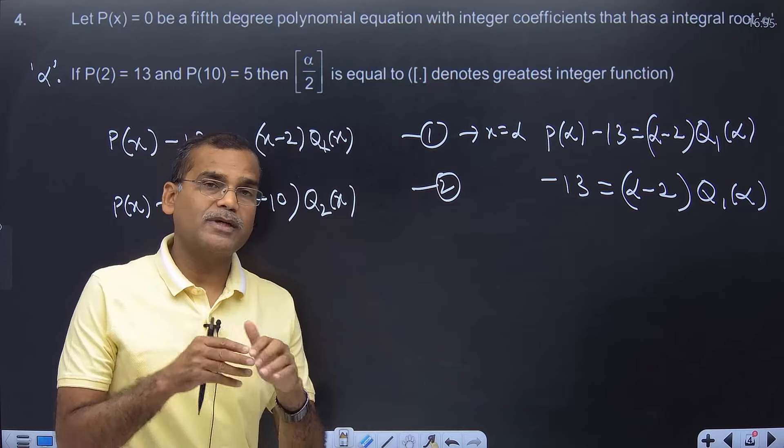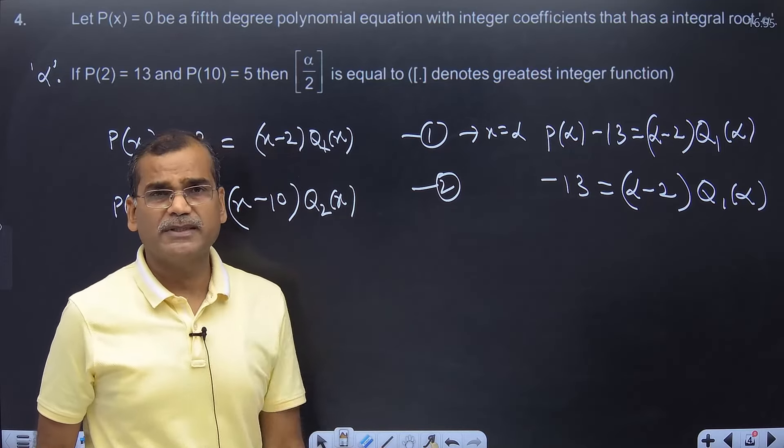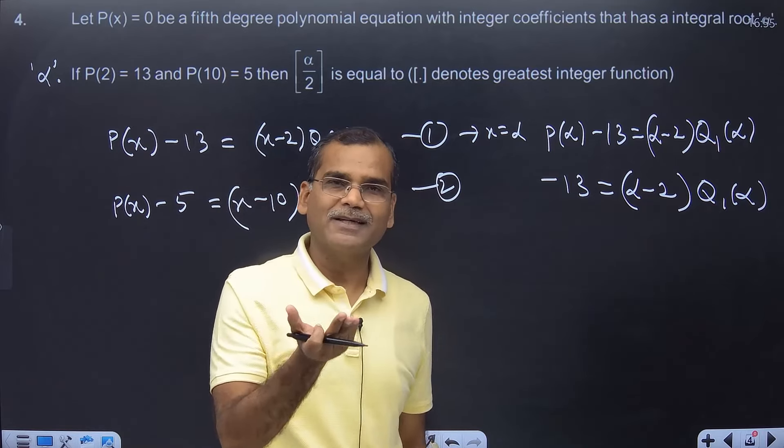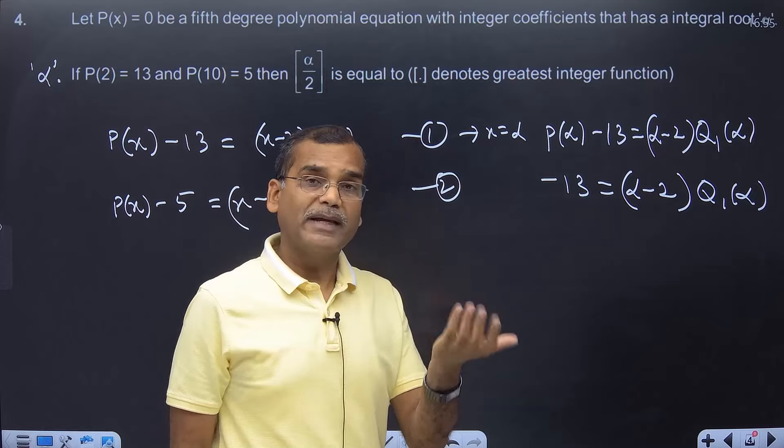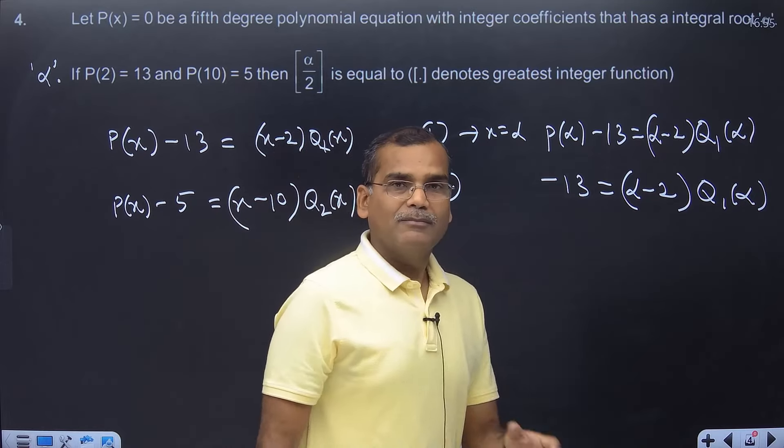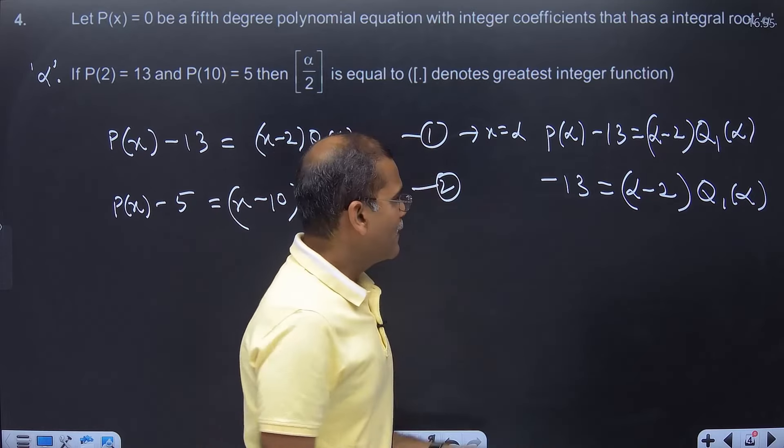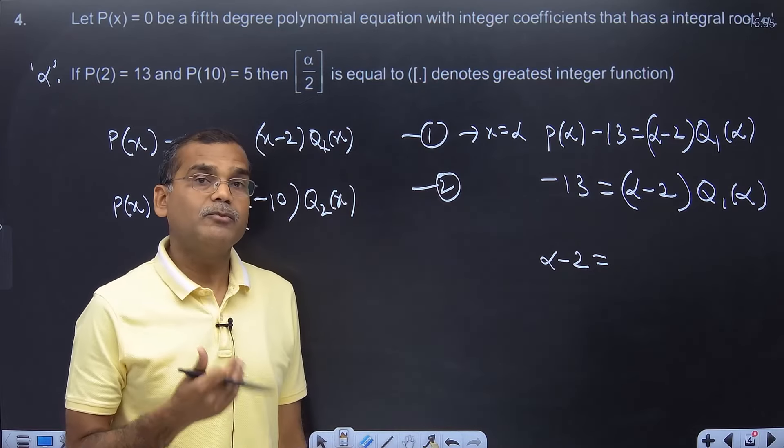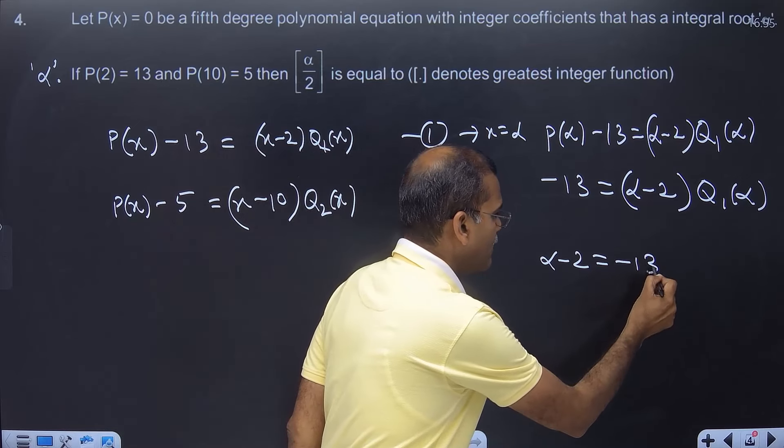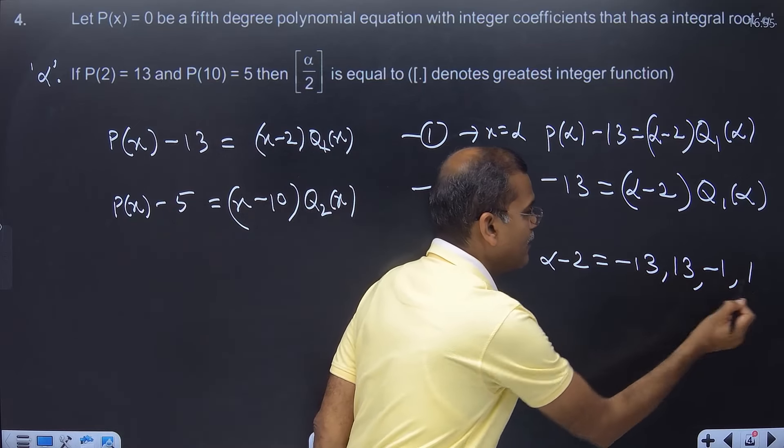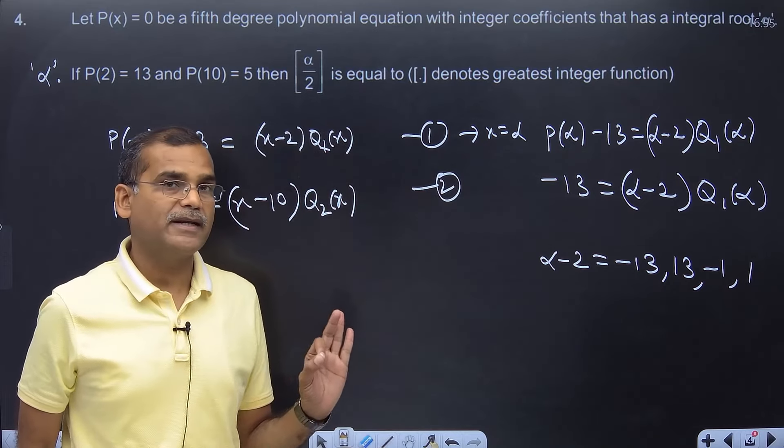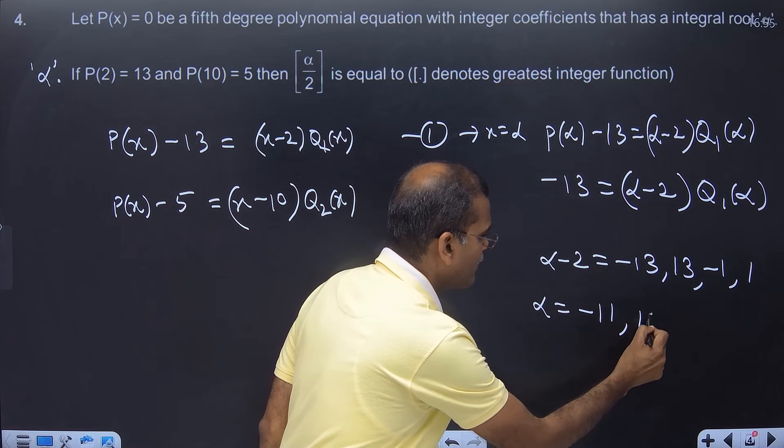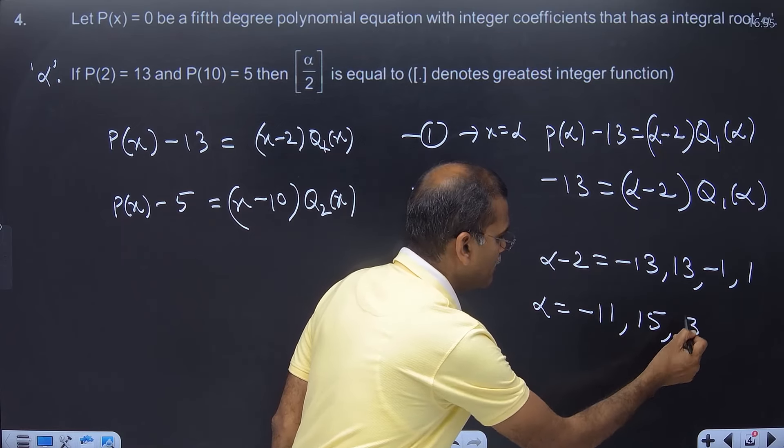Now you understand, this is a very repetitive process used in many questions with this idea, that this product of 2 integers equals minus 13. So there are very few cases: 13 times minus 1, minus 13 times 1, and other cases you can think of. So (alpha minus 2)'s possible values that I can see are minus 13, 13, minus 1, 1. I don't see any other possibility. So alpha's values are minus 11, 15, 1, and 3.